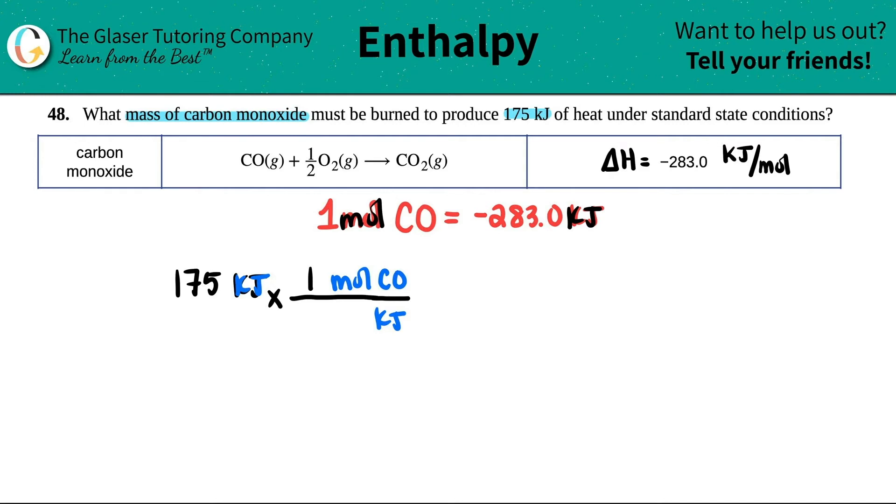Now you have two options here. You could put the negative here, but remember the negative just means that it's being released. There's no such thing as a negative amount of energy. It's just signifying that the energy is being released. So I'm just going to say that I'm releasing 283.0 kilojoules. So I'm canceling out the kilojoules.